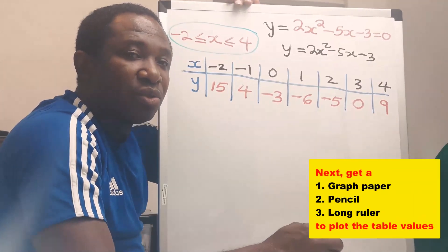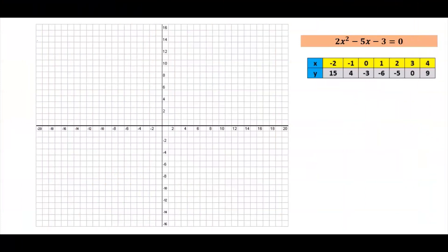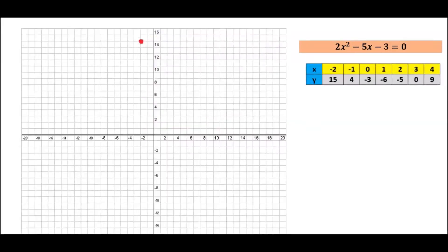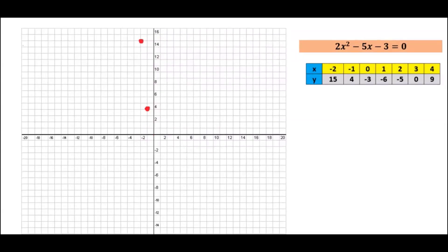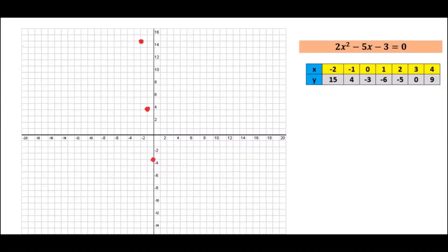You are going to need graph paper. From the table, let's plot the quadratic function. When x is minus 2, y is 15, and this is the meeting point. When x is minus 1, y is 4. When x is 0, y is minus 3.